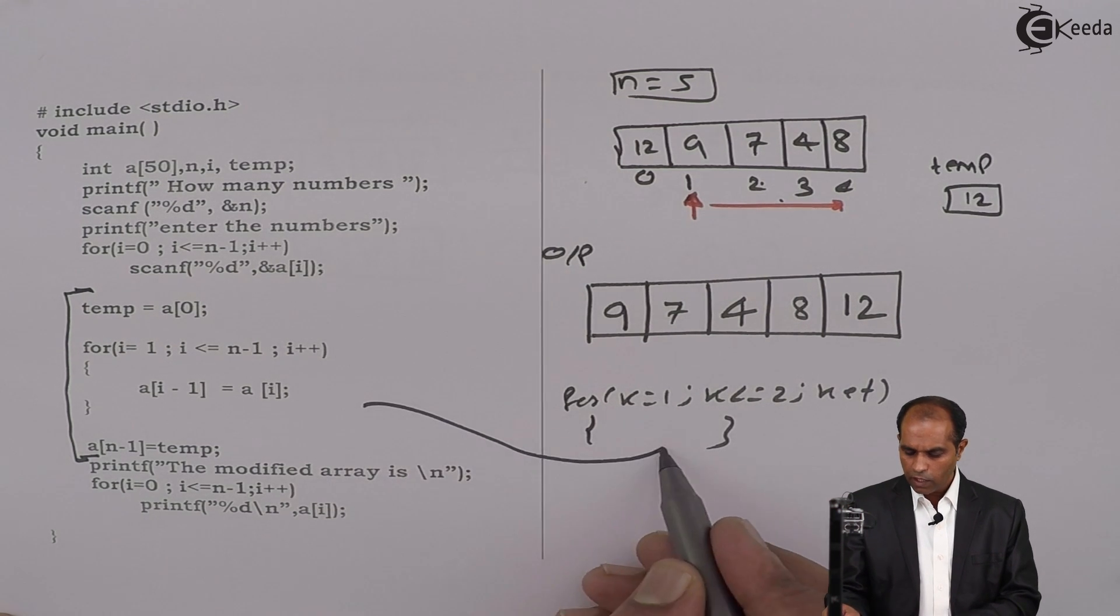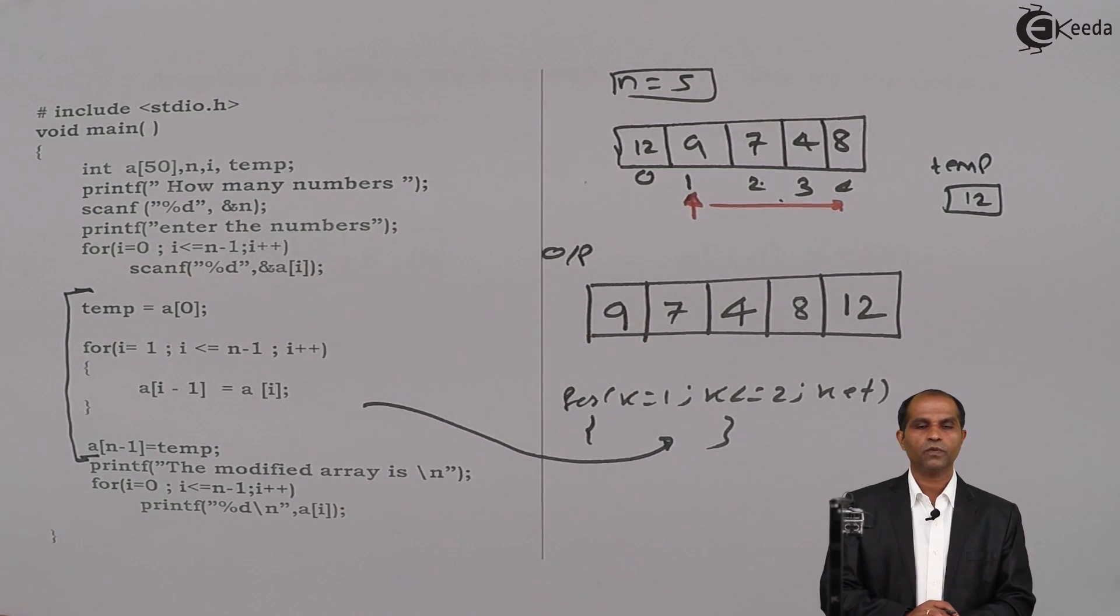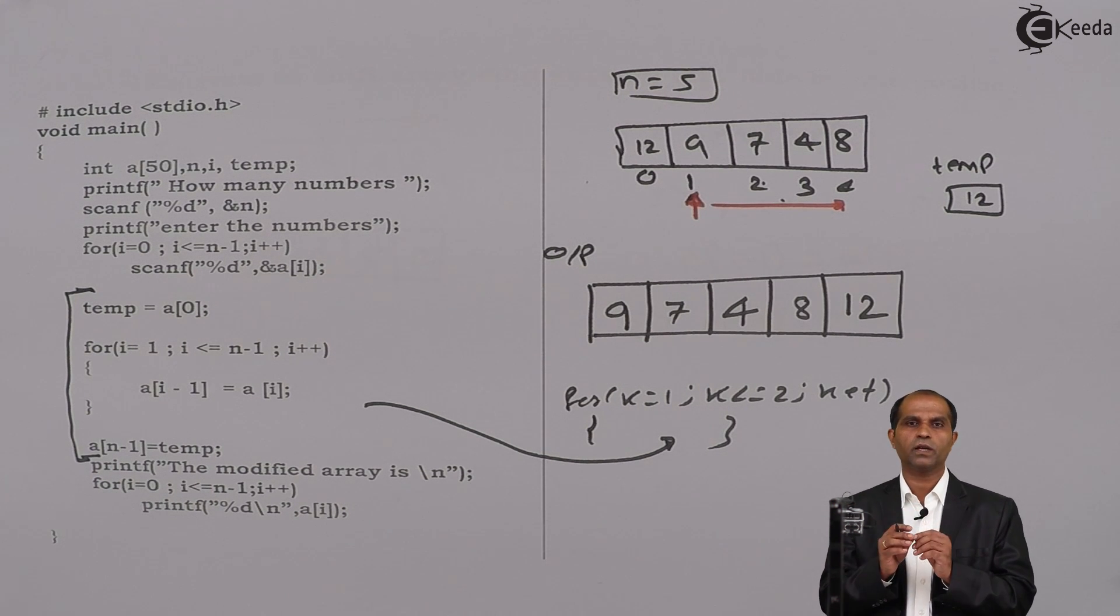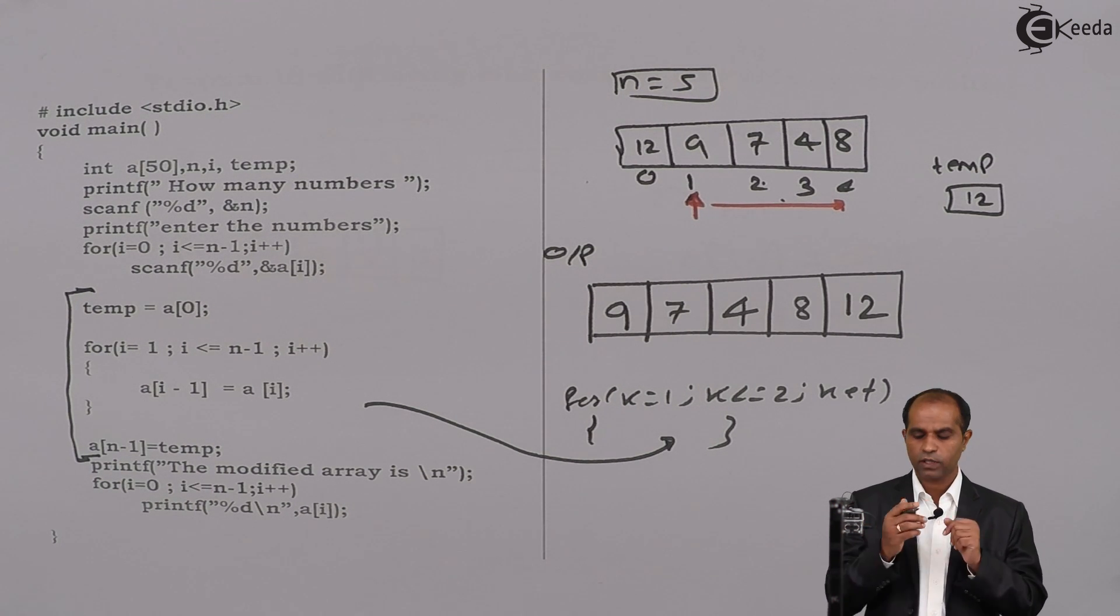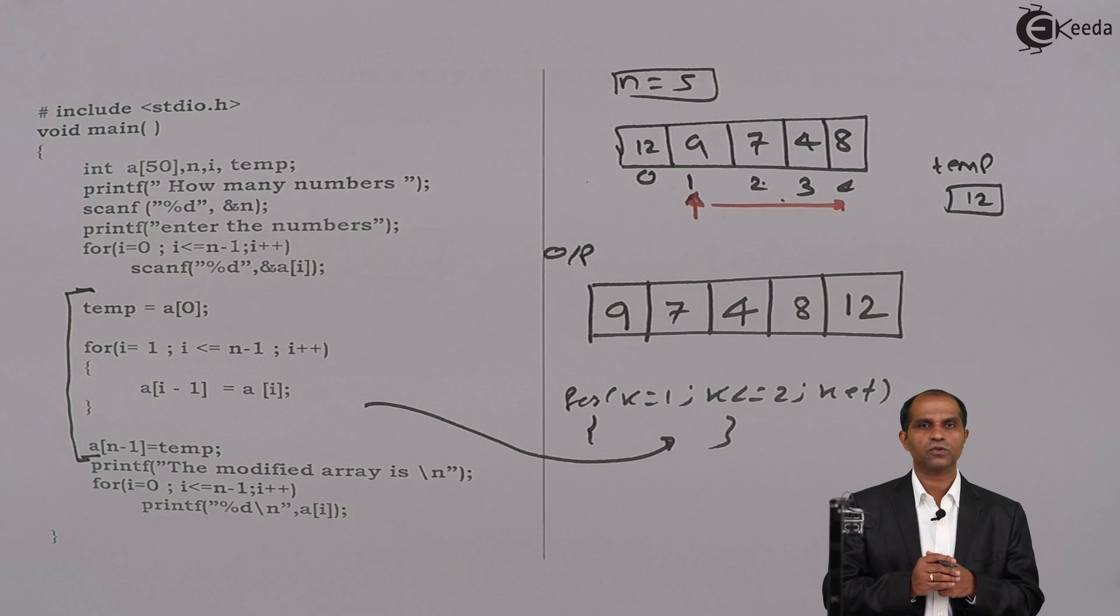And then the entire body has to be placed inside this particular k loop, which means that the elements need to be shifted by 2 times. If I say for 3 times, k equals to 1, k less than equals to 3.